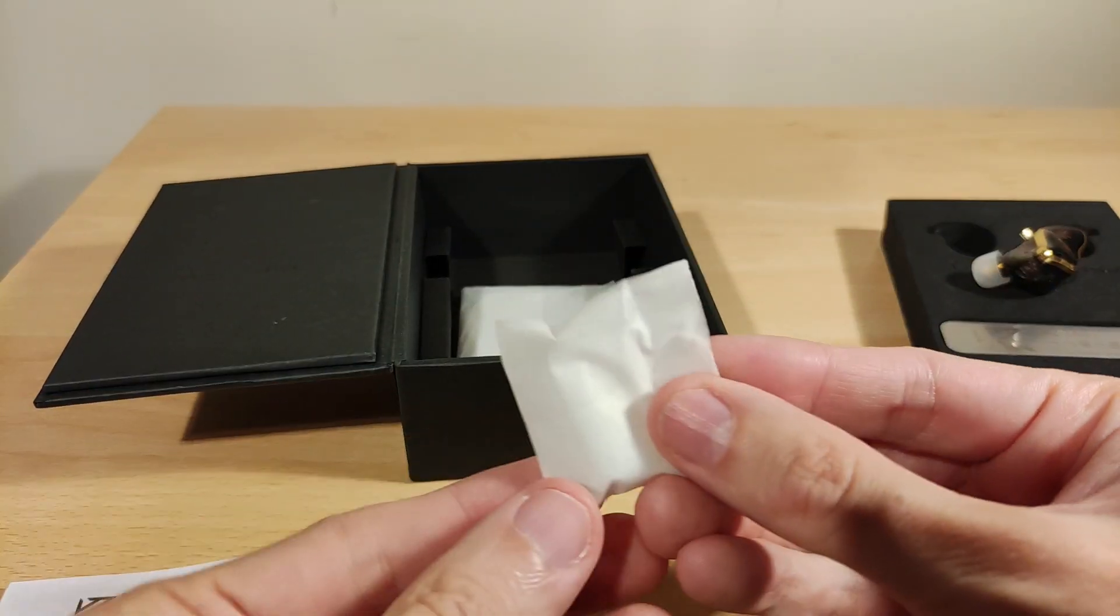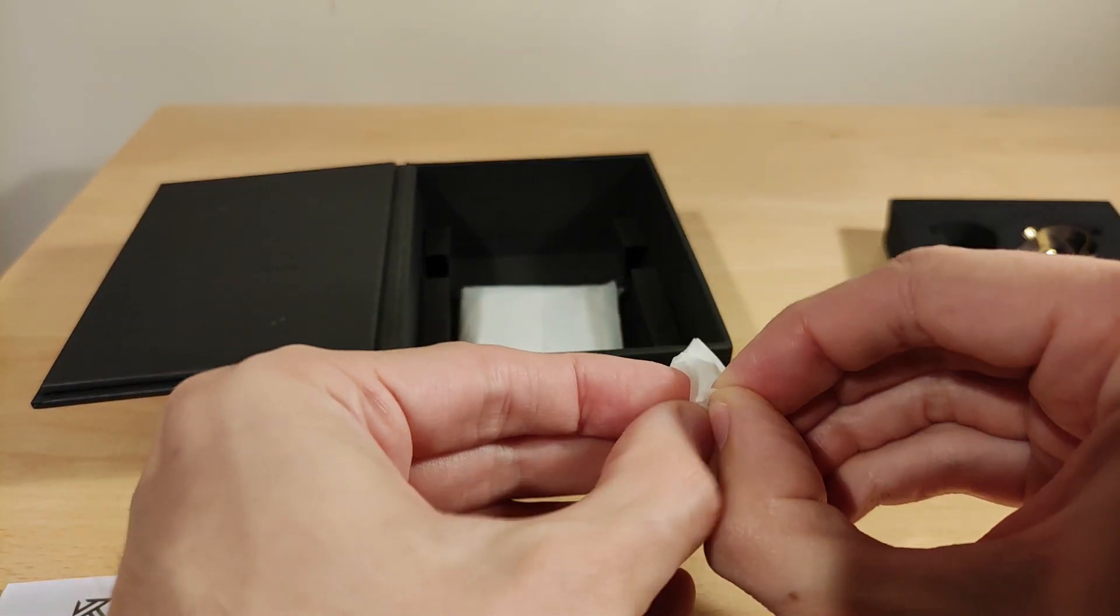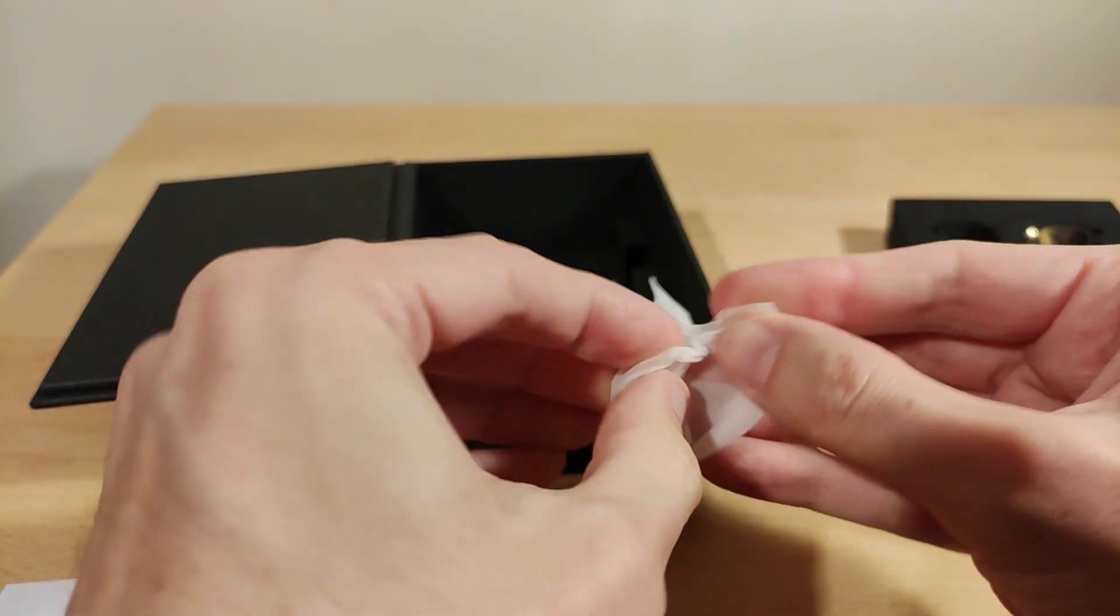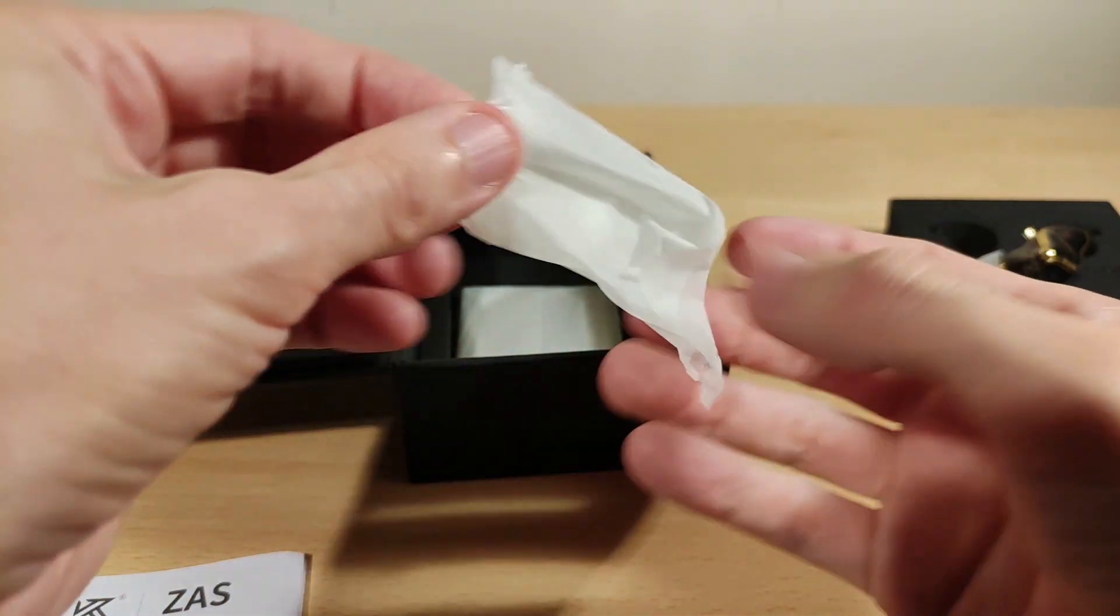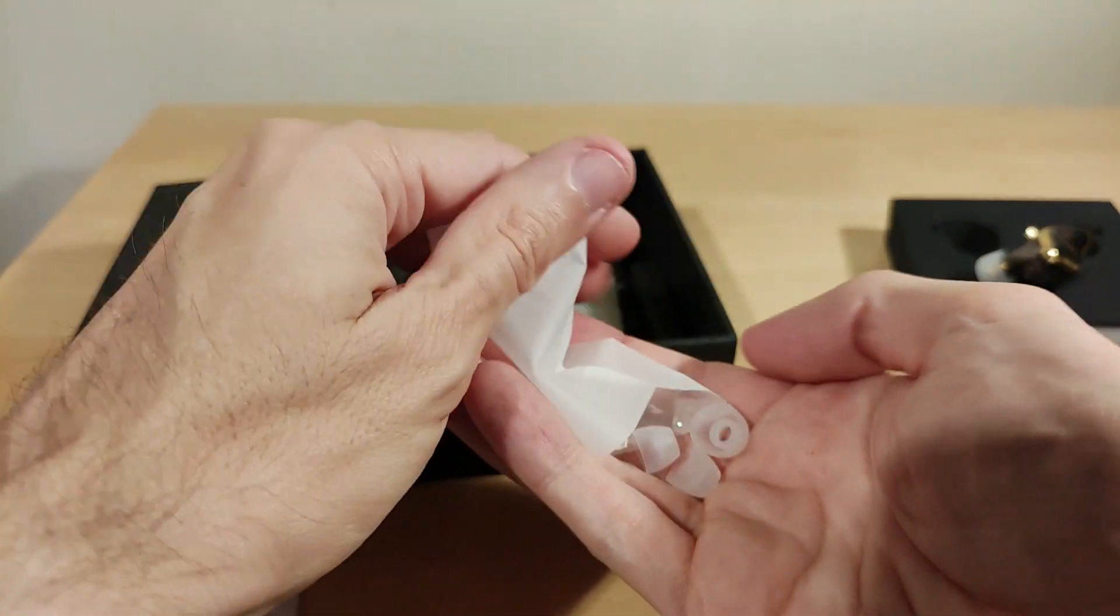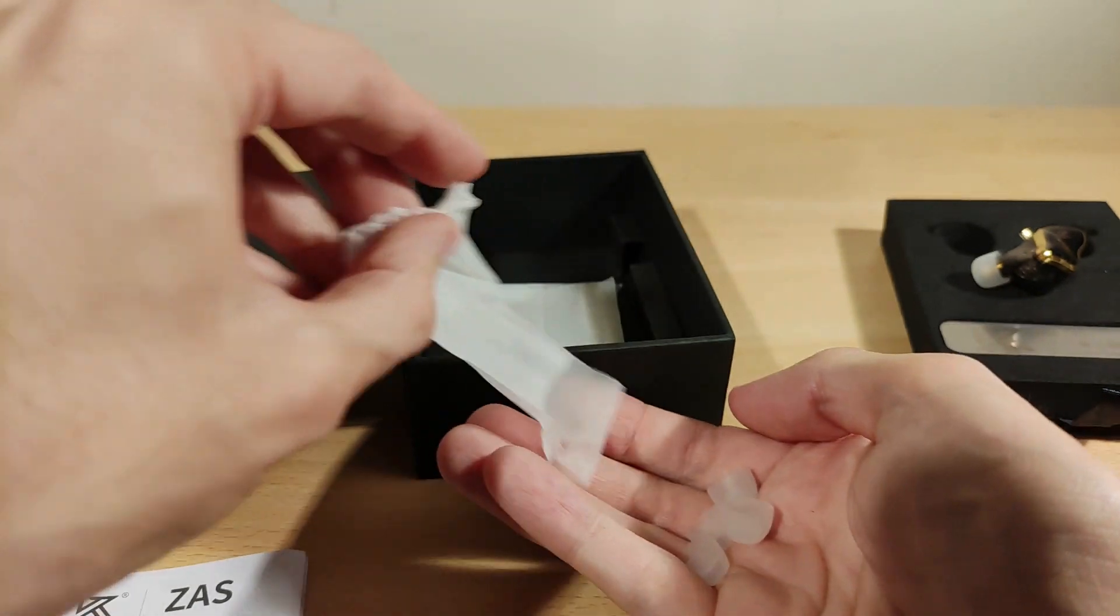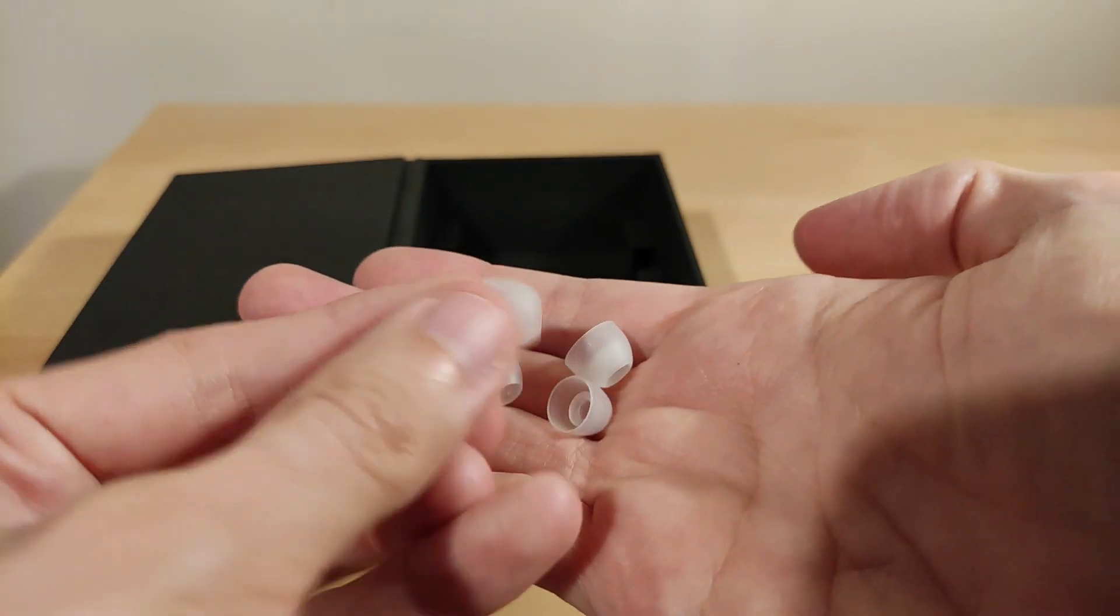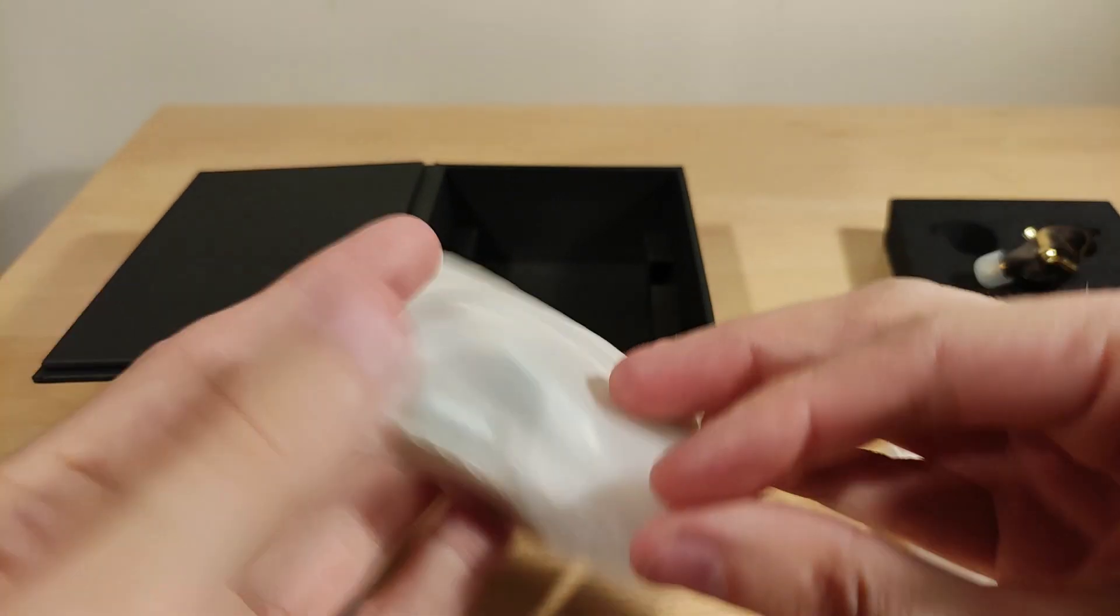On the back there, 7BA+1DD hybrid technology, L for left, ZAS. Kind of hard to see the drivers, I'll explain more later on in the video but you can see the DD is there and the armatures are around it, plus there's no armature in the nozzle which is good to see. Obviously we'll have a look at that in a bit. Just some paperwork. In here is tips, so quick look should be small and large I think because mediums normally do come already fitted.